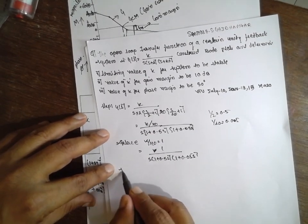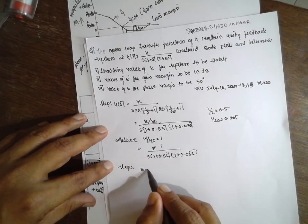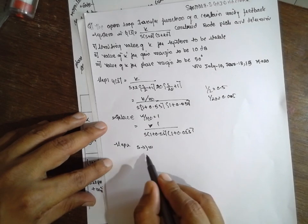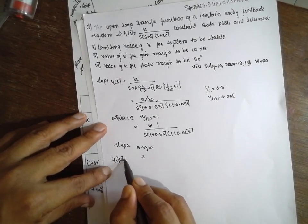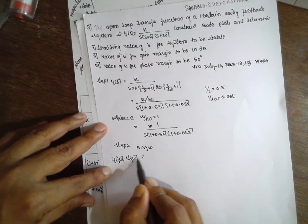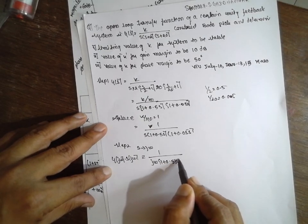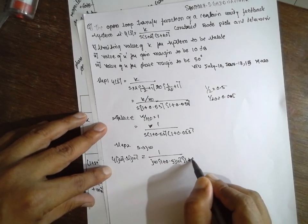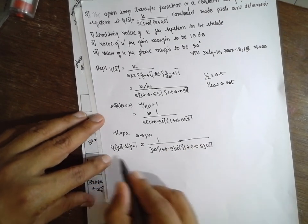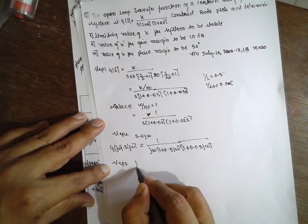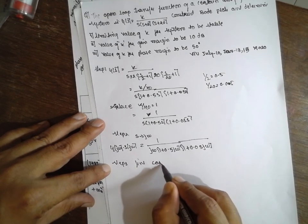Step 2: In place of s, we write j omega. So G(jω) equals 1 divided by j omega, times (1 plus 0.5 j omega), times (1 plus 0.05 j omega).